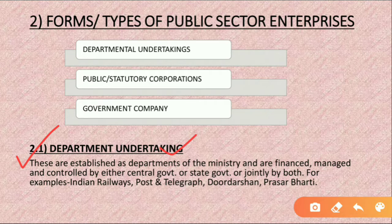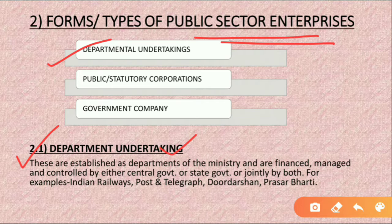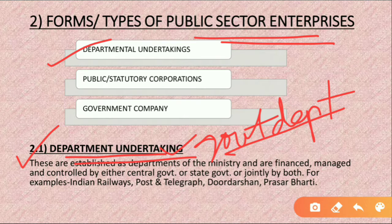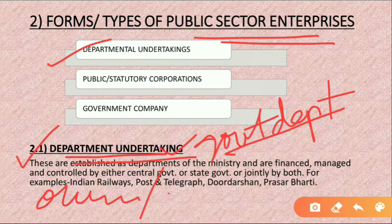Let's quickly revise departmental undertakings. This is the oldest form of public sector enterprise. By the word 'departmental' itself you can identify it — departmental undertakings are the departments of government. These departments have no separate legal existence, meaning no separation of identity. The government is both the owner and the manager — it can be central, state, or both.